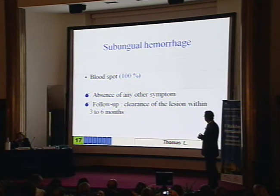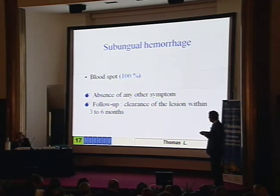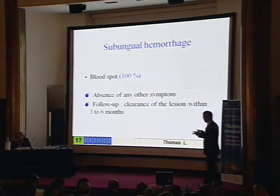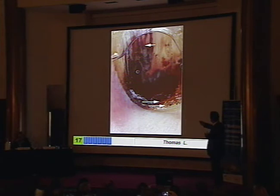For subungual hemorrhages, the key signs are blood spots, but you have to be very stringent on one point: the absence of any other symptom. And second, see this patient after some time to be sure nothing was hidden underneath the pigmentation. You can see that the proximal end is roundish and the distal end is filamentous, but if you see nothing else, there could still be a squamous cell carcinoma. So you have to see this patient after six months.